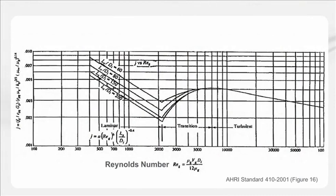Fluid velocity is also important because it is one of the key factors for determining flow turbulence, along with fluid density and viscosity and tube diameter. As the turbulence of a moving fluid increases, so does its ability to transfer heat from the tube wall to the fluid. The AHRI 410 chart depicts fluid turbulence as described by the Reynolds number on the x-axis, which is the primary driver of the heat transfer coefficient on the y-axis. The chart plots the Colburn J heat transfer factor versus the Reynolds number, used by coil manufacturers to rate their selection programs.